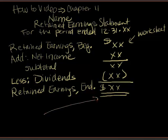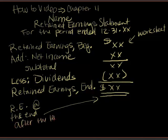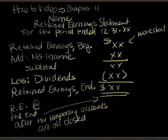Now this amount right here, the ending, will agree to your retained earnings balance at the end after the temporary accounts are all closed. So that should have your retained earnings balance at the end, and that will be in our GL.